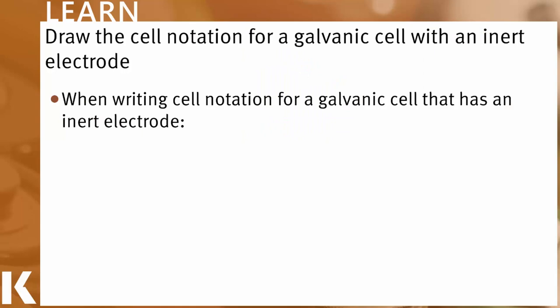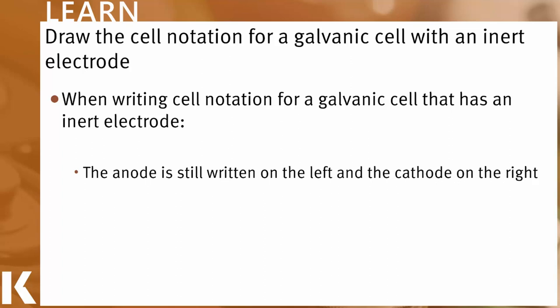The first thing to know about drawing notation under these slightly more complicated circumstances is that some things stay the same. In particular, the anode is still on the left and the cathode is still on the right. We're always drawing these cells such that the flow of electrons is from left to right from anode to cathode. So that stays the same.